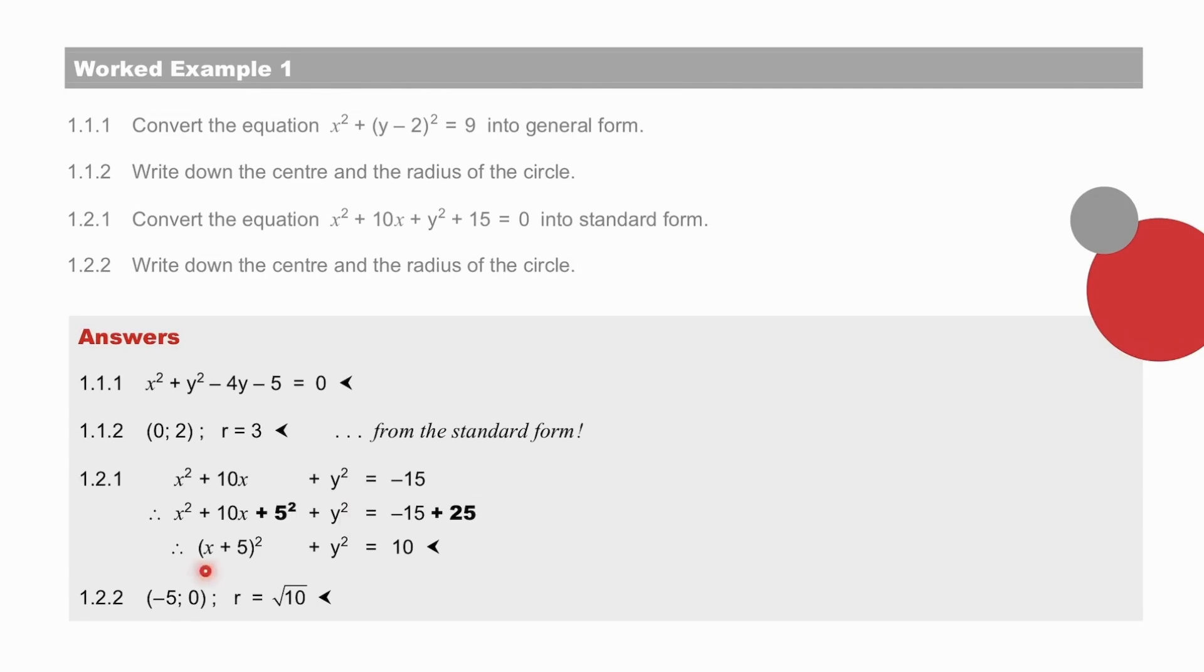There's no square needed to be completed in y². And the standard form is therefore that, from which we derive the centre, (-5, 0), and a radius of the square root of 10.